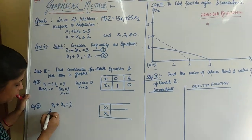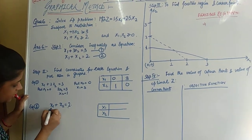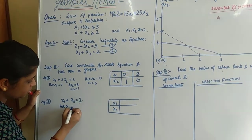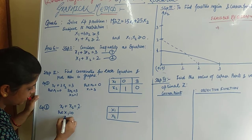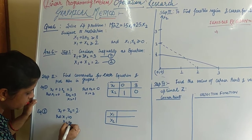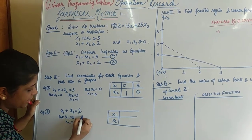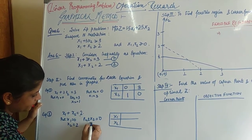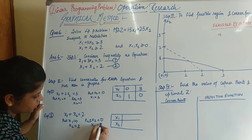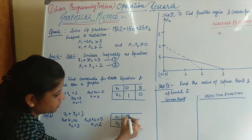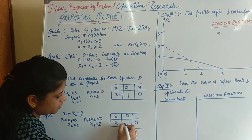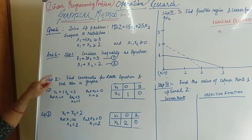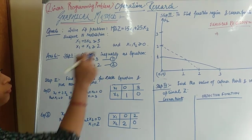For the second equation, put x1 equals 0, x2 equals 2. Put x2 equals 0, x1 equals 2. So the coordinates are (0, 2) and (2, 0). Second step is completed here.